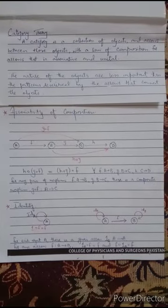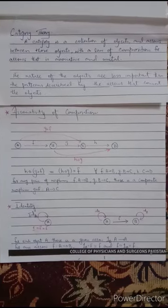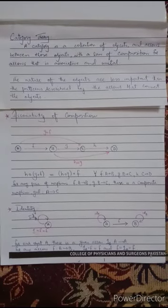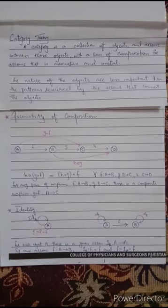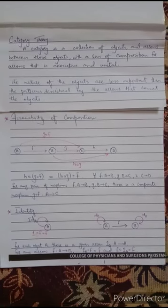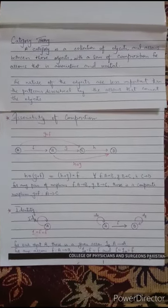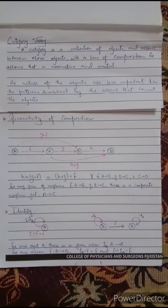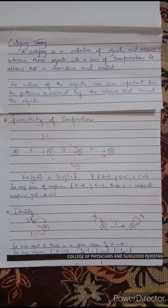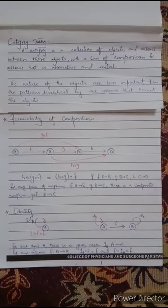After all these definitions, we can now define category theory. A category is a collection of objects and arrows — where arrows mean morphisms between those objects — with the law of composition for arrows that is associative and unital.